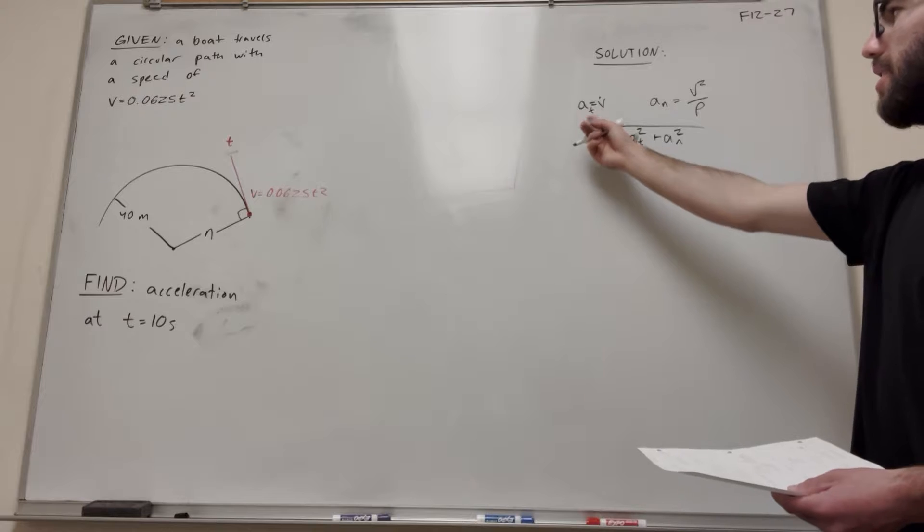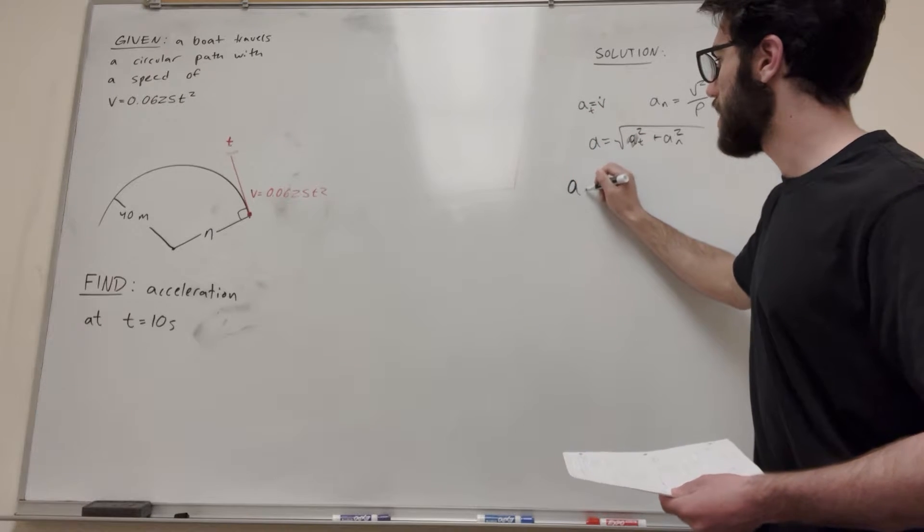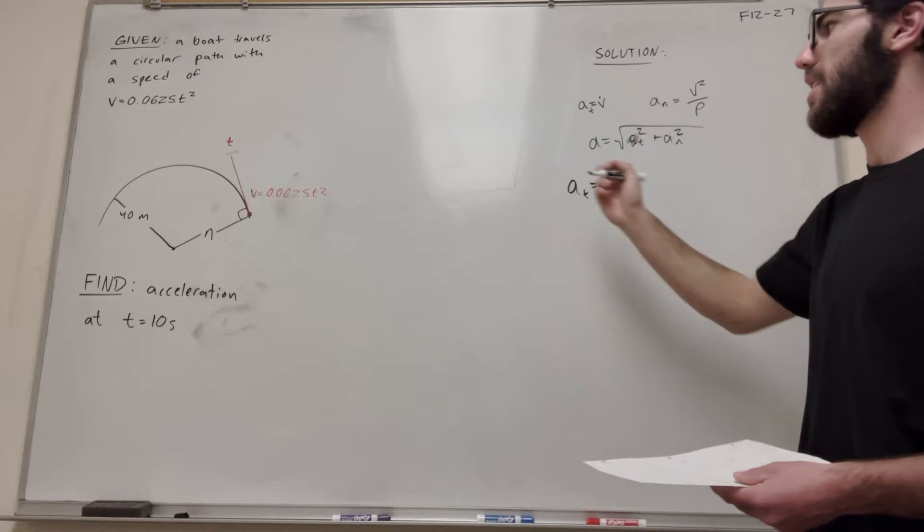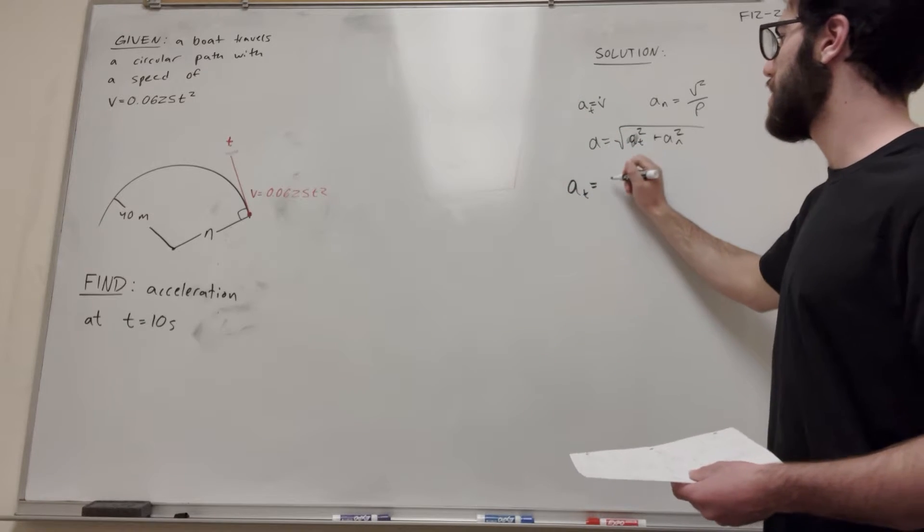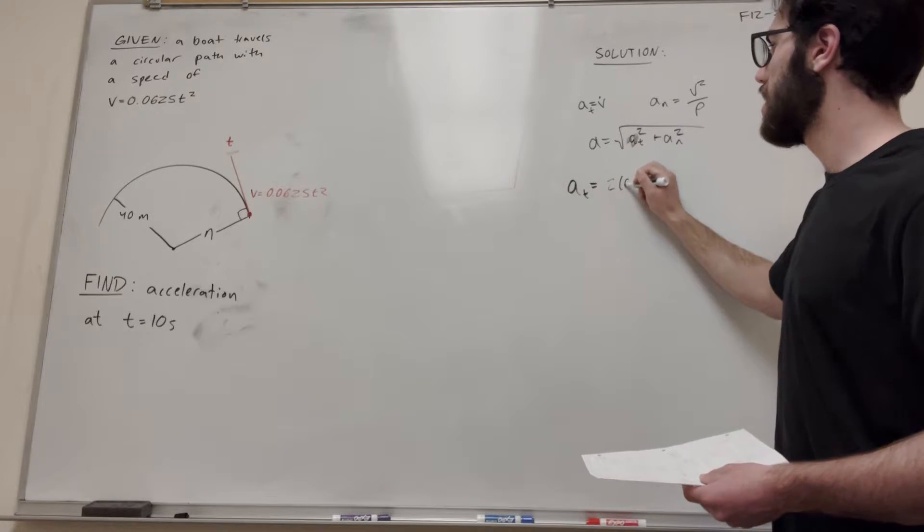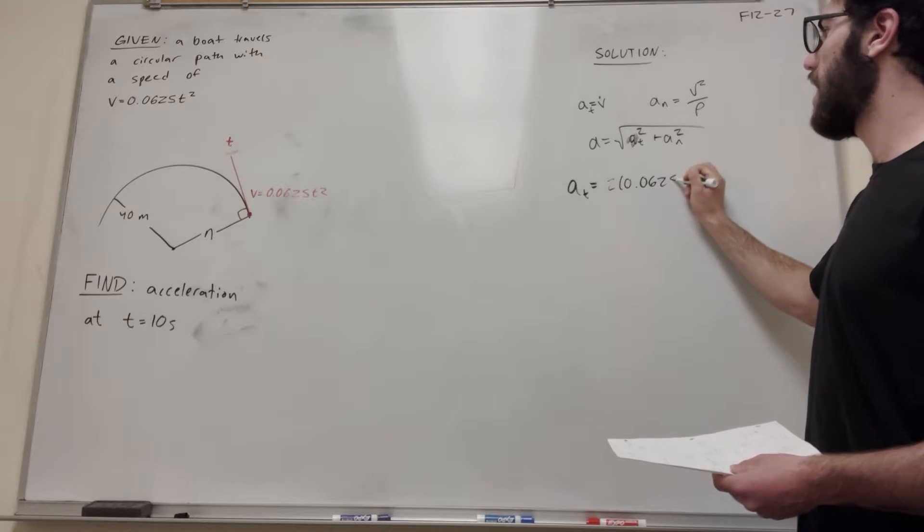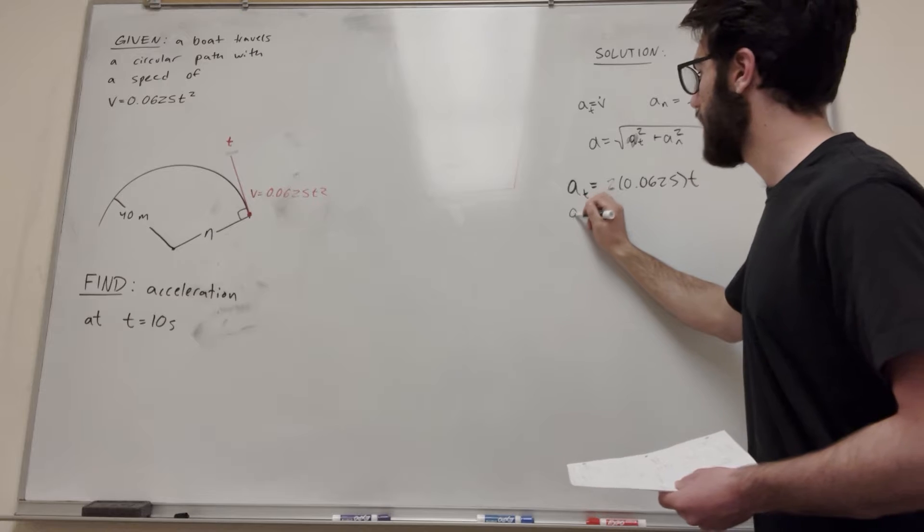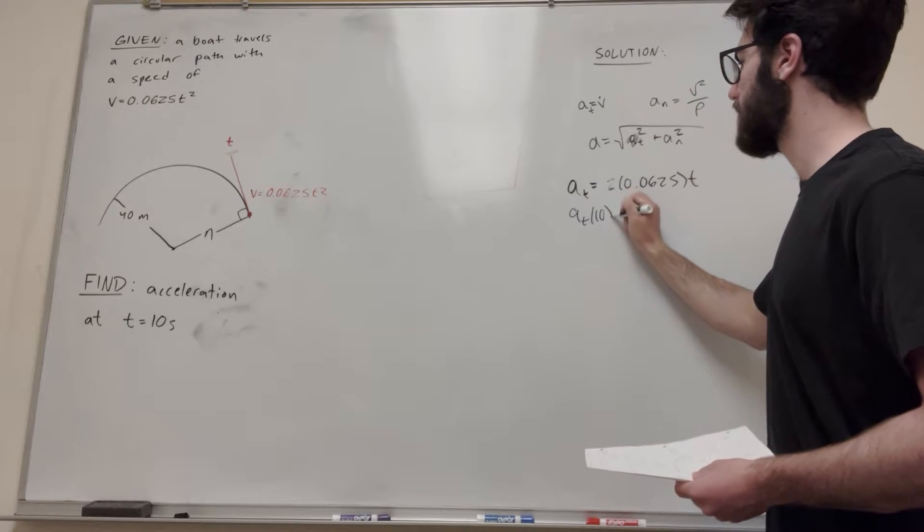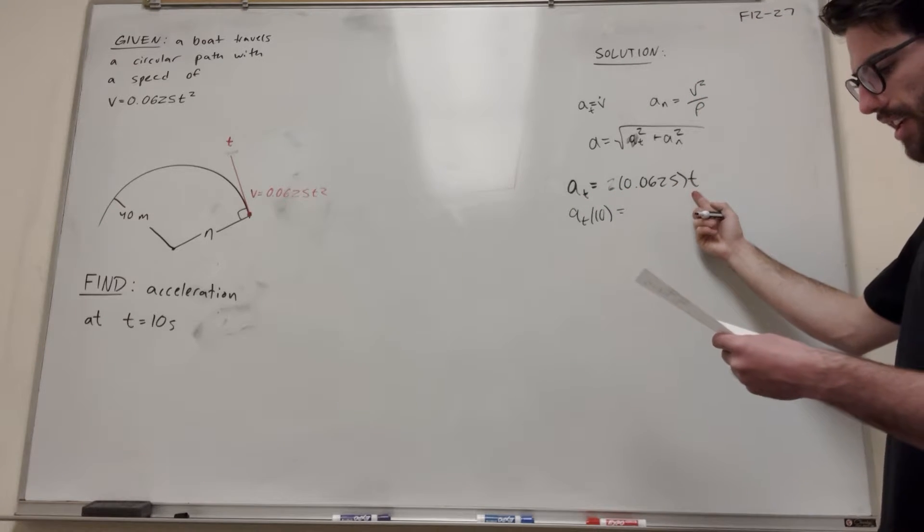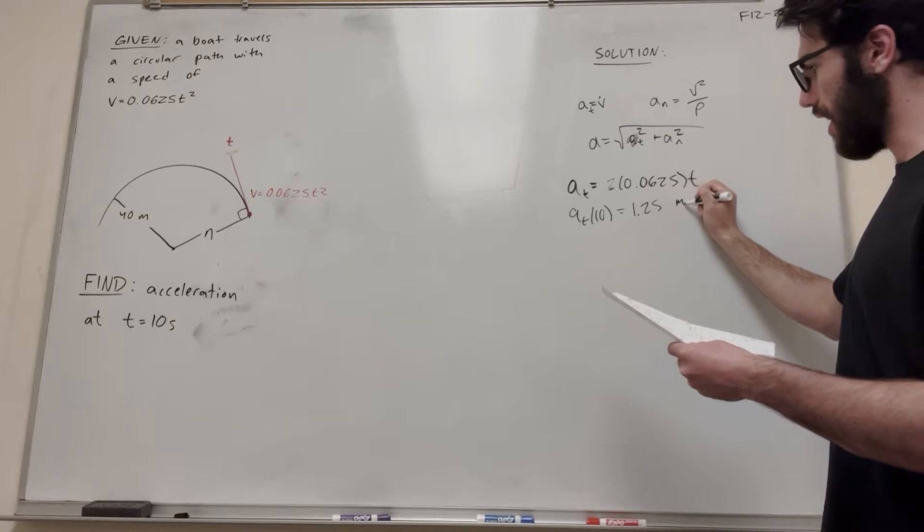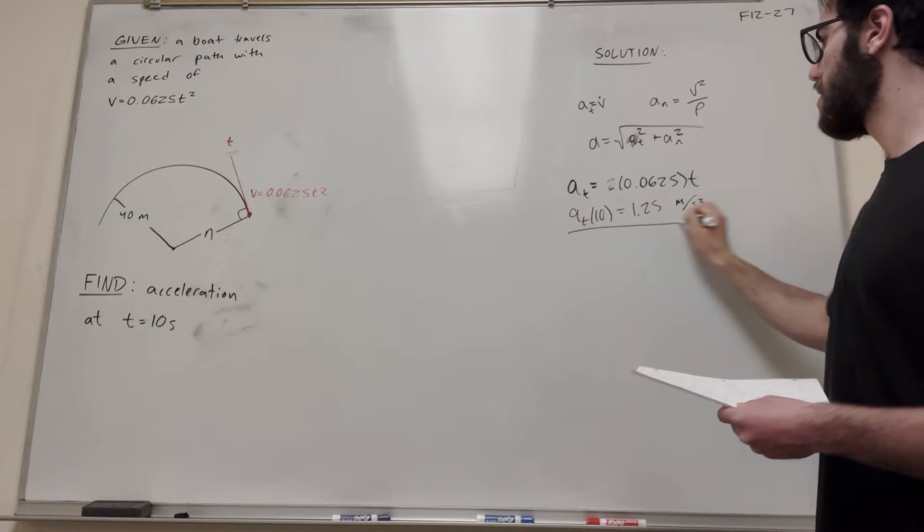Let's go ahead and figure them out, starting with tangent. Tangential acceleration is equal to v dot, so we're just going to take the time derivative of velocity. So that 2 is going to come down, and it's going to be 2 times 0.0625t. If we want to find the tangential acceleration at 10 seconds, we're just going to plug in 10 for t, and we get 1.25 meters per second squared.